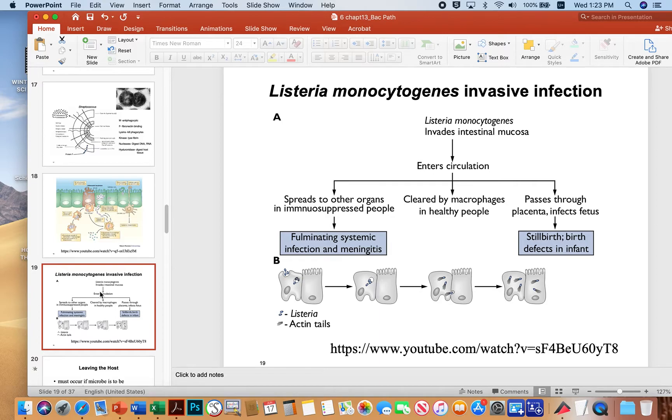Listeria monocytogenes causes an invasive infection as well, just like salmonella. Here you see the organisms being brought in by M cells, but rather than being processed by macrophages below, they can sort of escape the vacuoles and then zip around inside the cells, as you see here, using host cell actin.